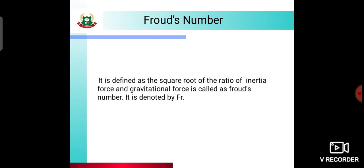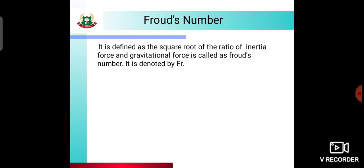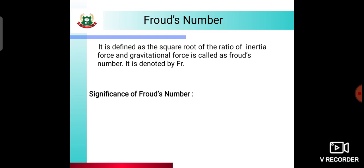The next concept is Froude's number. Froude's number is defined as the square root of the ratio of inertia force to gravitational force, and is denoted by Fr. The significance of Froude's number: when Fr equals 1, the flow is critical.